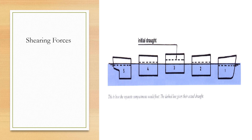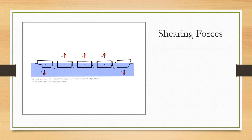Here you can see how the separate compartments would float individually — the dashed lines give the actual draft of each compartment. In another diagram the black arrows give the resultant shearing forces between the different compartments, and the red arrows give the resultant per section. That covers the shearing forces; I'll now go into bending moments.